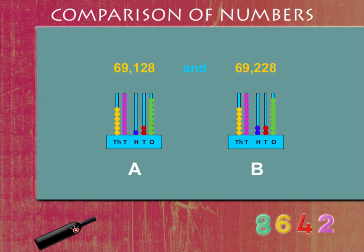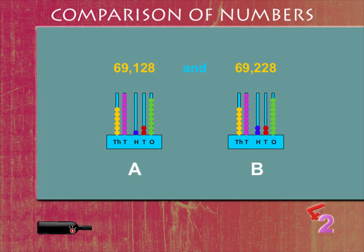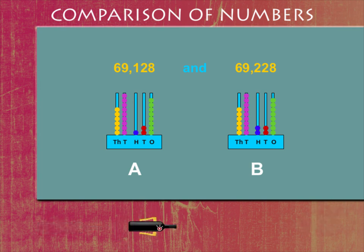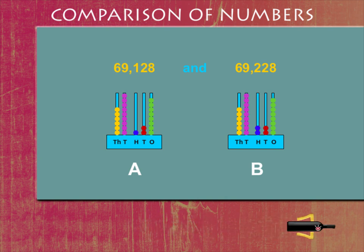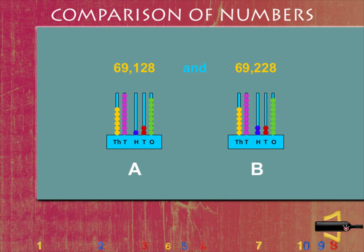In both abacuses, you can see 8 ones, 2 tens, 9 thousands, and 6 ten-thousands. But there is 1 bead of hundreds in A and 2 beads of hundreds in B.